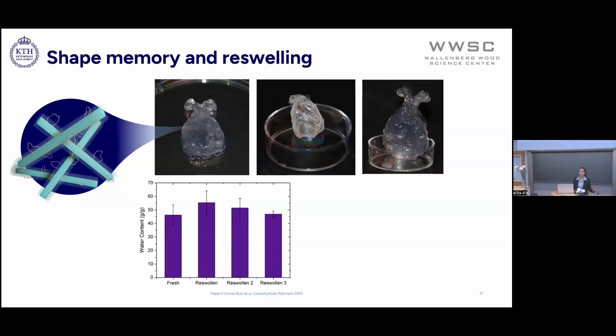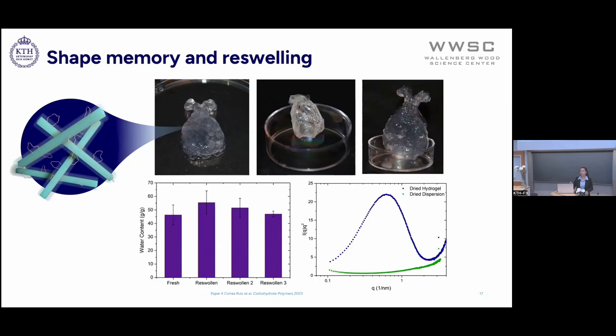To explore why it can reswell in the same way, we did small-angle X-ray scattering on dry samples — one without any crosslinks and one with the dry hydrogel. What you can see in the graph is that in the dispersion, there's really not much porosity, which suggests that when the dispersion doesn't have any crosslinks, the fibrils are allowed to slide and make a very compact, dense film. But when you have the dry hydrogels, the links between the fibrils are strong enough to overcome the capillary forces during drying and keep the network structure even when dry, so when it swells again, it comes back to the same place.